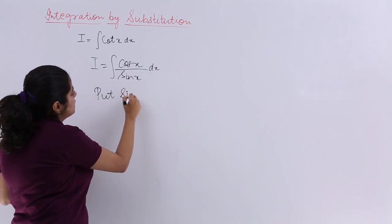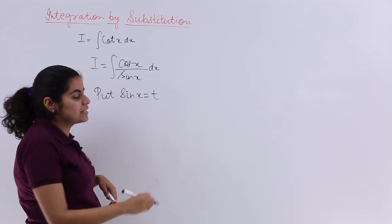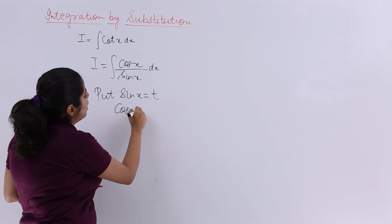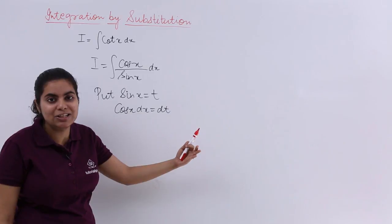I have to put sin x as t. Now what is the differentiation? It is cos x dx equals dt. So we are using the substitution method of integration.